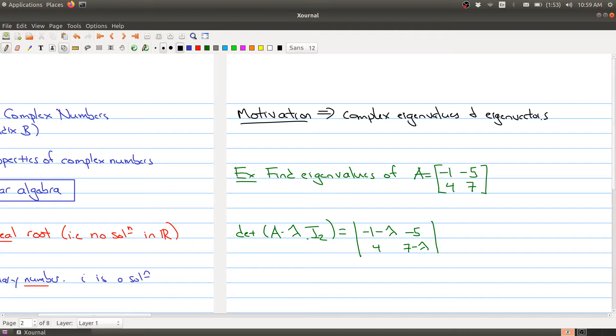Let me give you a simple example. Here we have a 2x2 matrix with entries -1, -5, 4, and 7. Say I ask you to find the eigenvalues of my matrix. You do the regular process, looking at the matrix A minus lambda I2, and I've already set up the determinant.